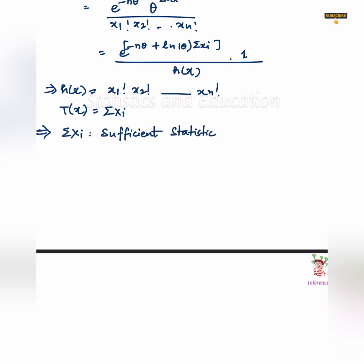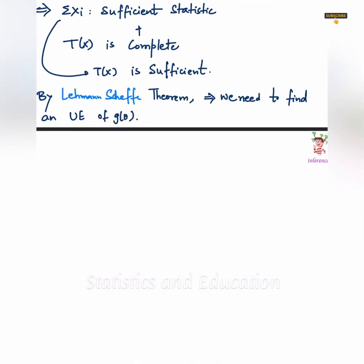So, from here, we get Tx equals to summation xi. This is sufficient and complete statistic. Then, our solution is complete.